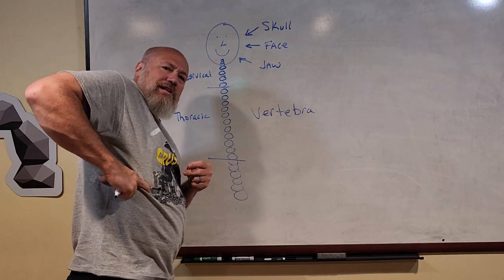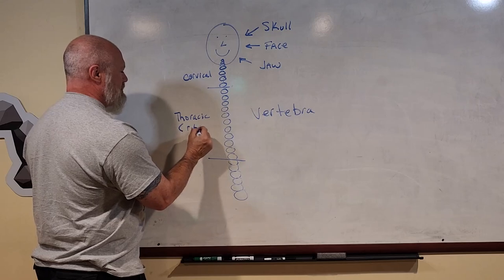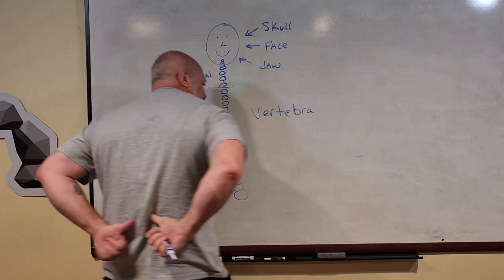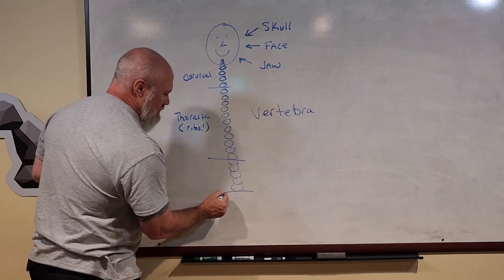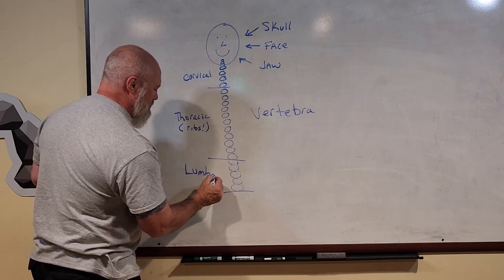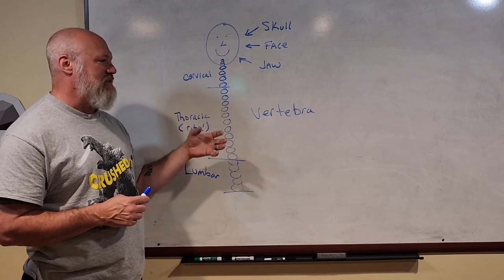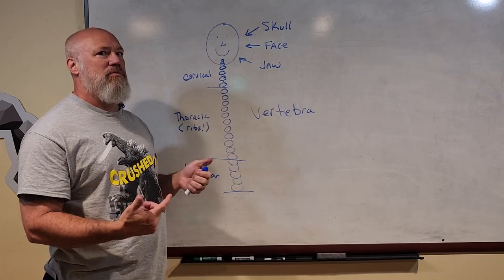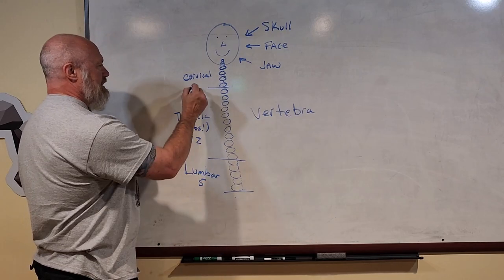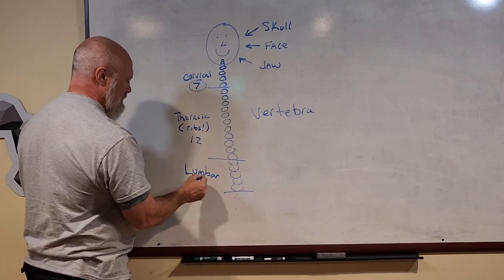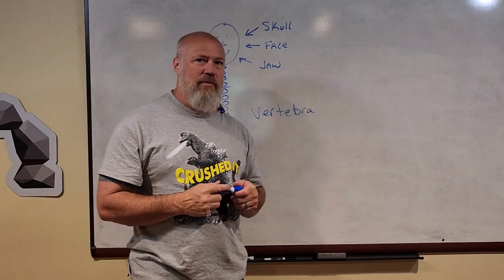Each thoracic vertebra has two ribs attached to it — one on each side. The bones in your lower back, just above your belt, are the large lumbar vertebrae, and there are five of those. So your backbone has three sections: seven cervical, twelve thoracic, and five lumbar — adding up to 24 total. Your backbone is also called your spinal column because it houses and protects your spinal cord.